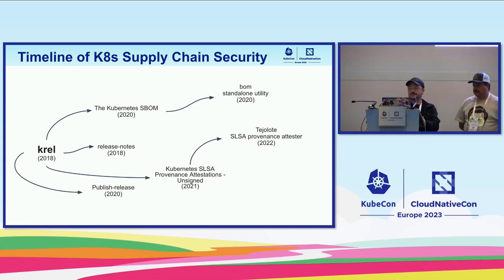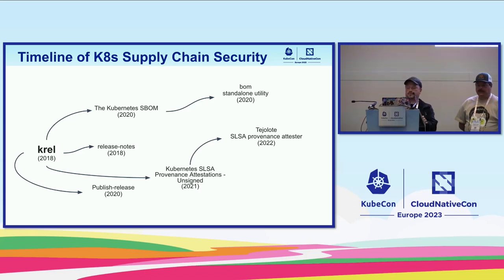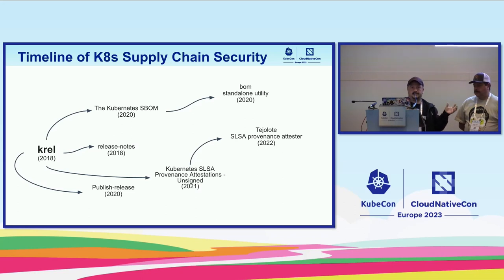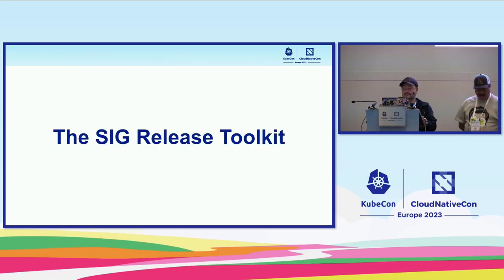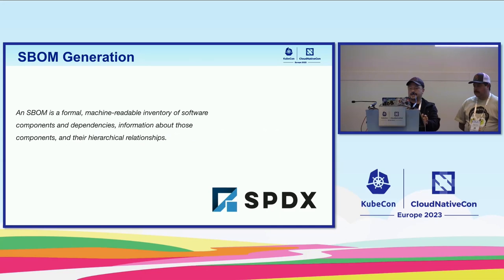We also started generating SLSA attestations inside of krel, and then we realized that's not the right place to do them, so we moved them out into another program. We also have a tiny utility called publish-release that handles all the GitHub artifact uploading — all derived from inside of krel. This is what we chose to release and package together, calling it the sig release toolkit.